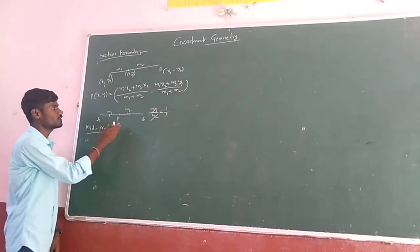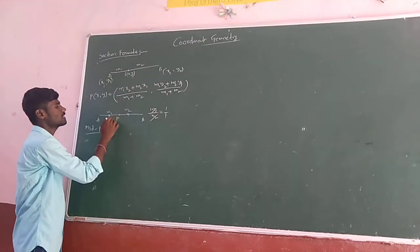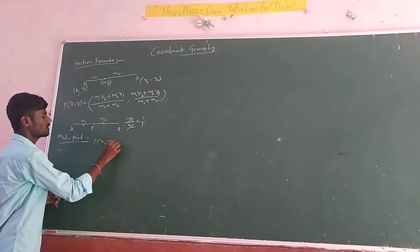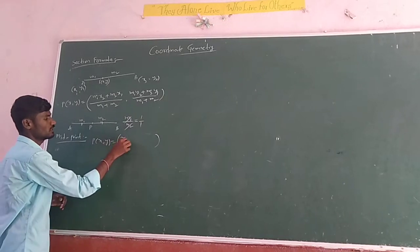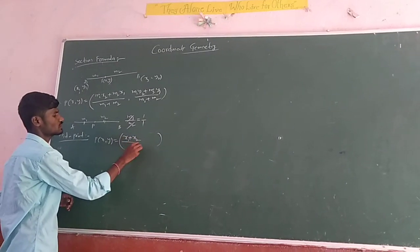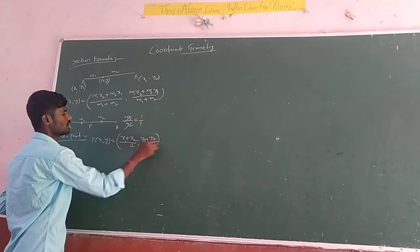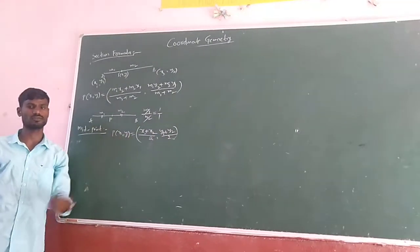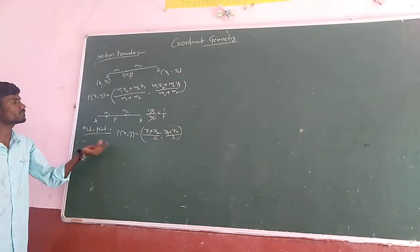Midpoint formula nothing but from section formula only. But here the ratios of, means the parts are equal. That point P of X comma Y can be found with the midpoint formula: X1 plus X2 by 2, Y1 plus Y2 by 2. Means nothing but average of X coordinates, average of Y coordinates. So this is said to be midpoint.